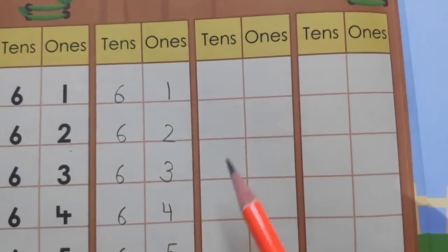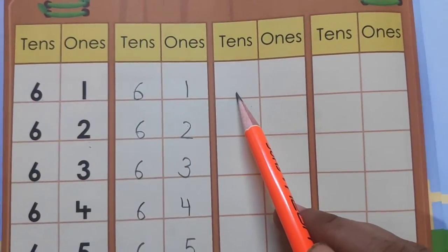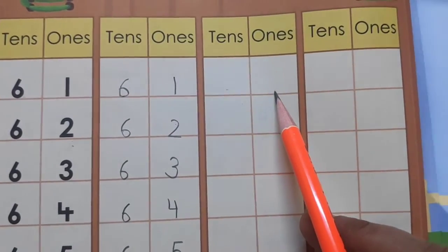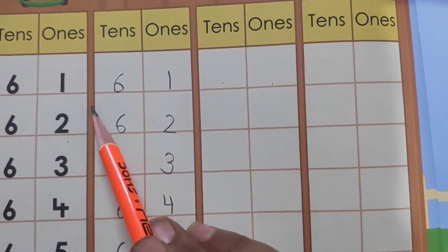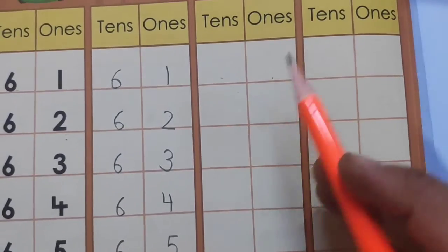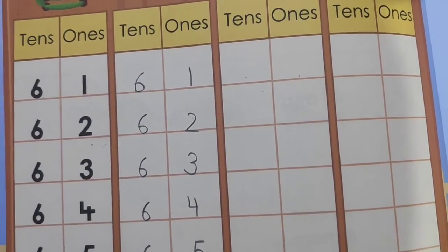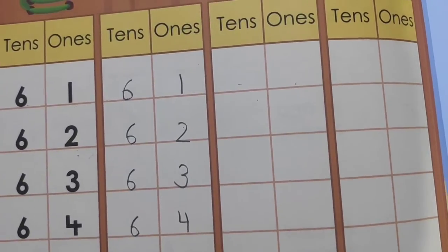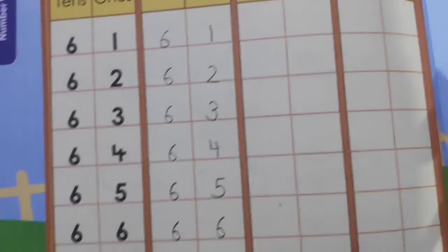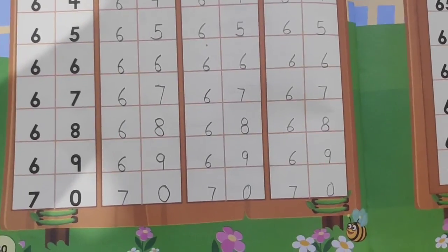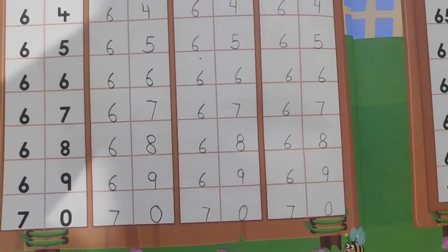In the same way, you have to write 6 in the 10s place and 1 in the 1s place for 61. In the same way, you have to do it again. So children, I hope you all have understood today's work. Goodbye!